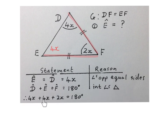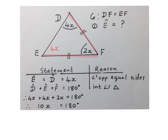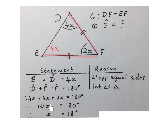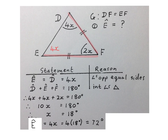We may then write: angle D plus angle E plus angle F equals 180 degrees — interior angles of a triangle. So: 4X plus 4X plus 2X equals 180 degrees. Solving for X: 10X equals 180 degrees, divide by 10, giving X equals 18 degrees. Then angle E equals 4X equals 4 times 18, and the final answer is 72 degrees. Please stop the video and get your head around this solution.